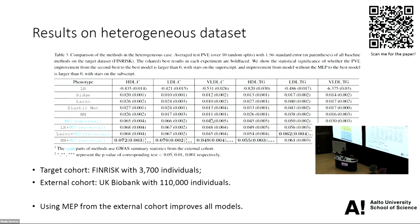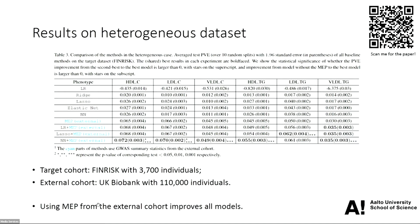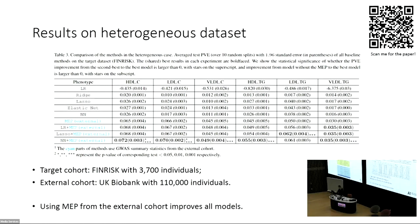In this table, we show prediction performance on six different phenotypes across columns. Each row represents a different machine learning method commonly used in this setting. The numbers are R-squared, or proportion of variance explained, on the test set — higher is better. Using the main effects prior estimated from the external cohort improves all the machine learning models evaluated.